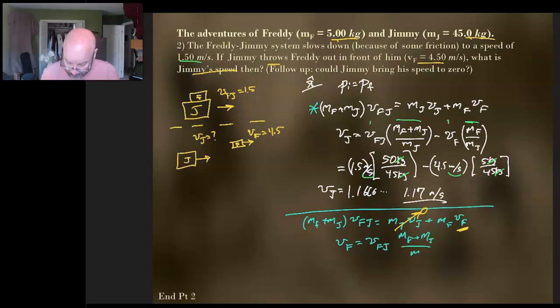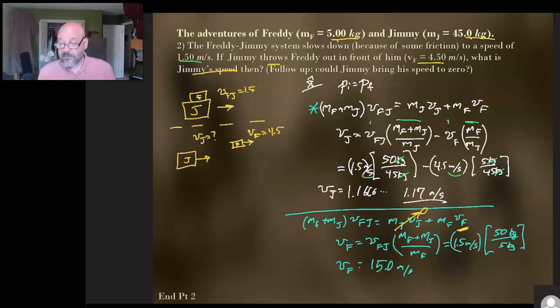Now if we put in our numbers, we got 1.5 meters per second. Our combined mass is 50 kilograms over 5 kilograms, just like that. And that works out to have a really nice solution, which is 15 meters per second. So if Jimmy can fling Freddy fast enough that Freddy's going 15 meters per second, then Jimmy would stop. Then Jimmy would stop.